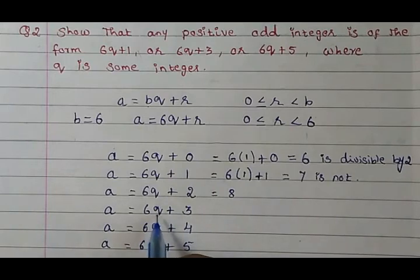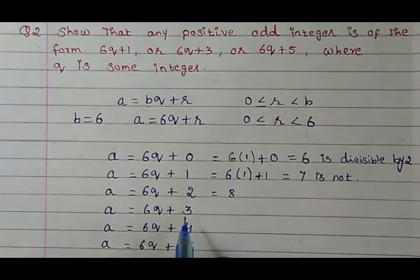6q+3. Now if you put here 1, 6×1 = 6 plus 3. It will be 9. So 9 is not divisible by 2.